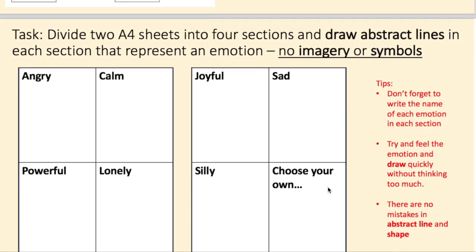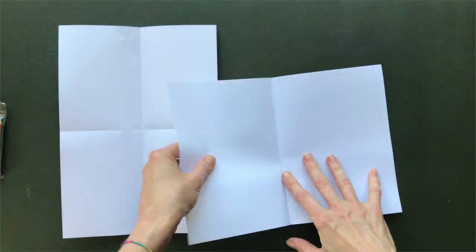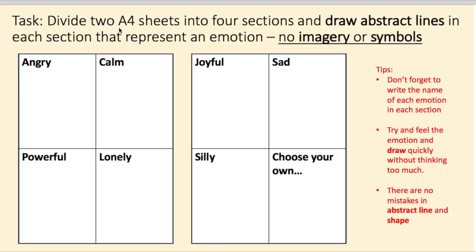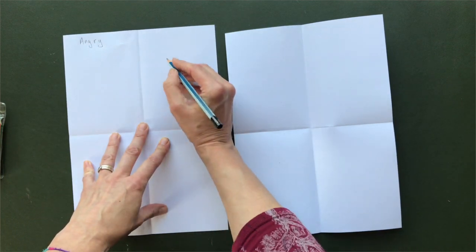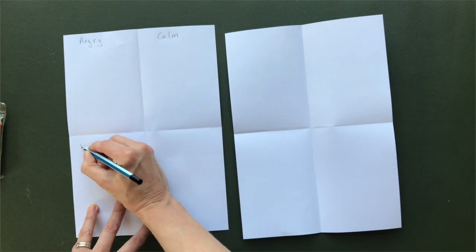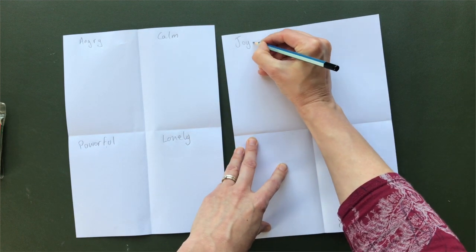What I wanted you to do as a task is to divide two A4 sheets into four sections and draw abstract lines in each section that represent an emotion. Using no images or symbols, just pure line. Put the pencil on the paper and see how you feel. There's no way of doing this wrong because it's a very personal thing about how you feel when you put pencil to paper. Don't forget to write the name of each emotion in each section. Try and feel the emotion and draw quickly without thinking too much. There are no mistakes in abstract line and shape.